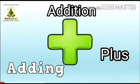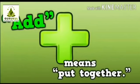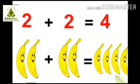Earlier we had learned about addition — that means plus, means adding more. Add means put together. We learned adding with numbers and objects like 1 plus 0 is equal to 1, and 2 plus 2 is equal to 4. That means 2 bananas plus 2 bananas is equal to 4 bananas — all together 4 bananas.